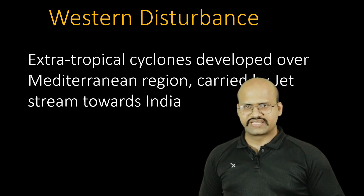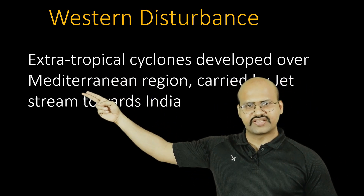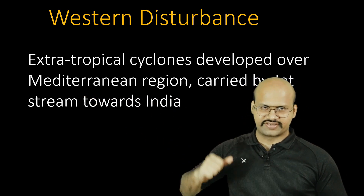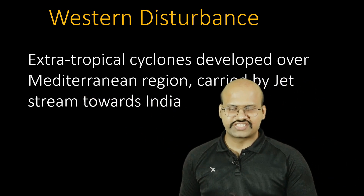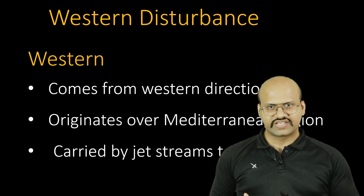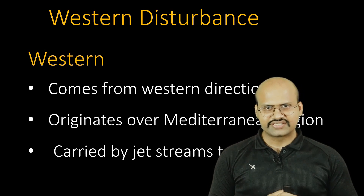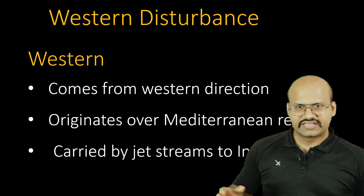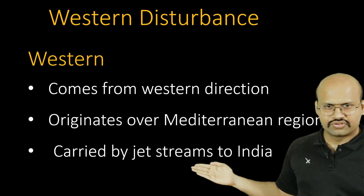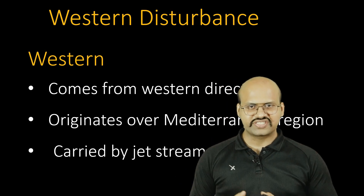A western disturbance is an extra-tropical cyclone which is developed over the Mediterranean region and then carried towards India by jet streams. The word 'western disturbance' is in itself self-explanatory — 'western' means something coming from the western direction, which is consistent with its origin over the Mediterranean region.